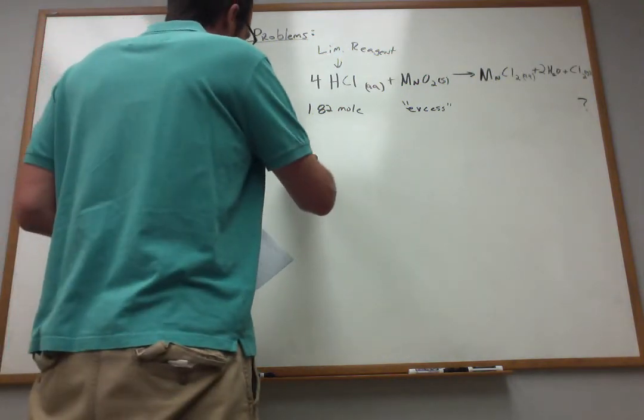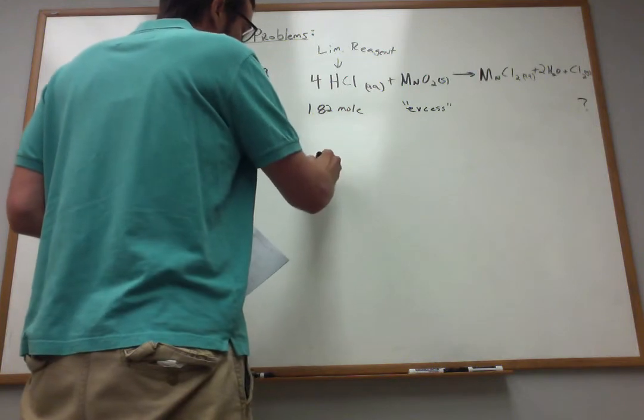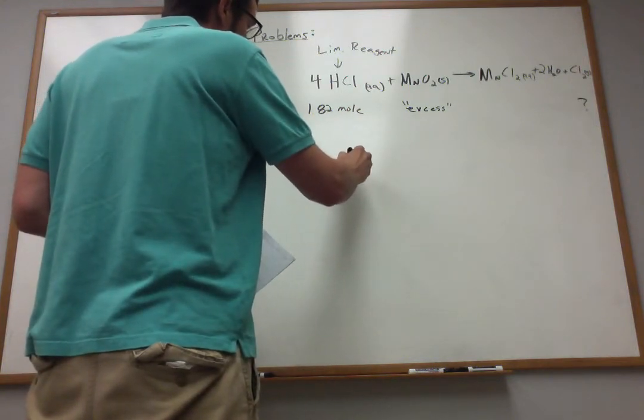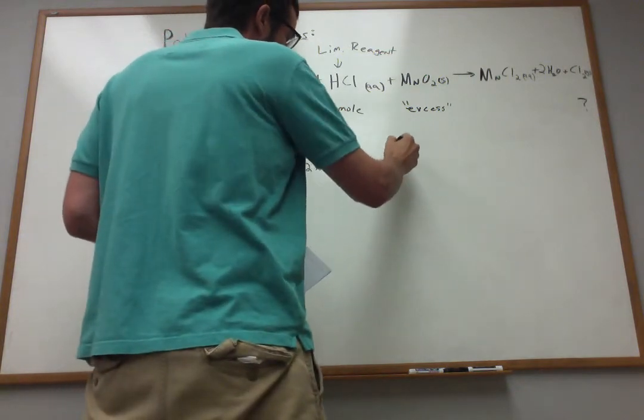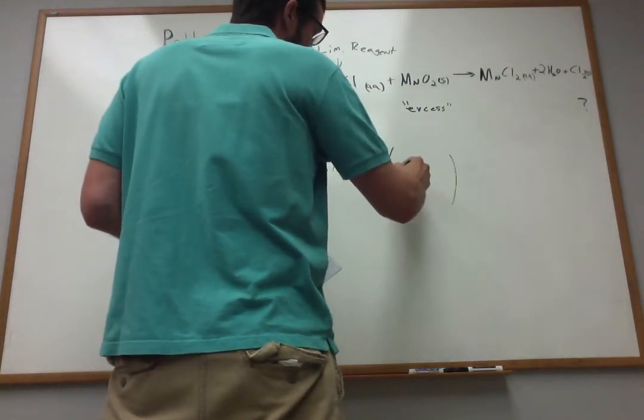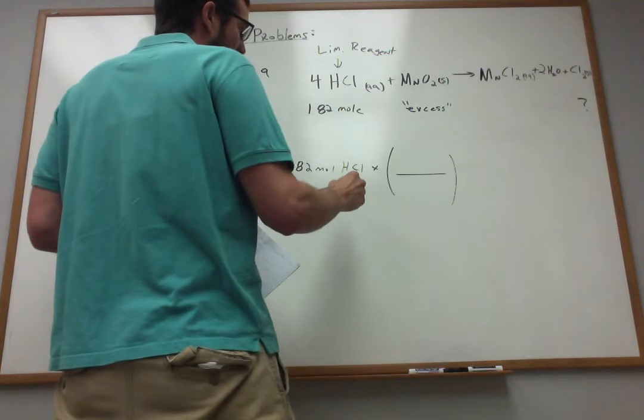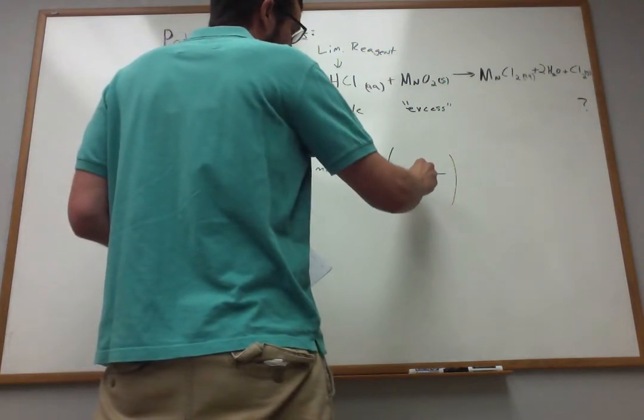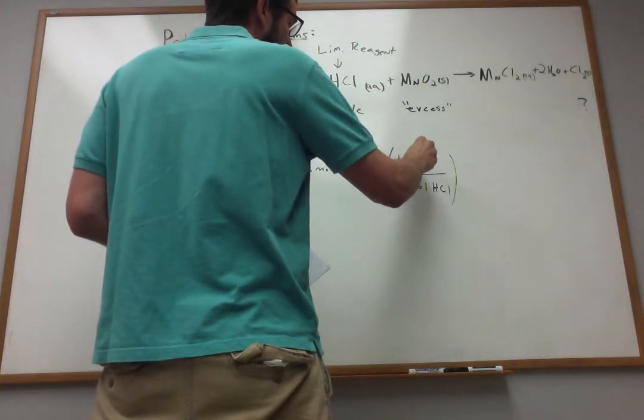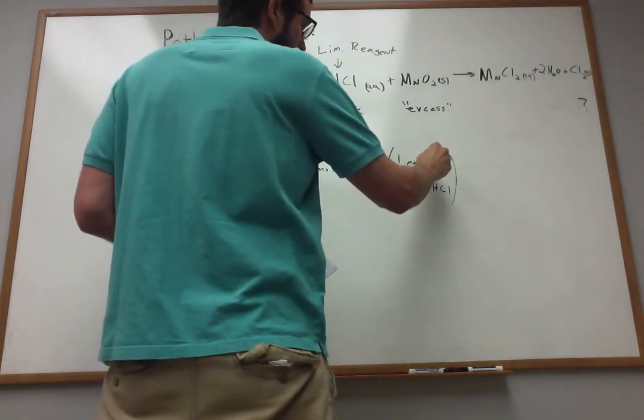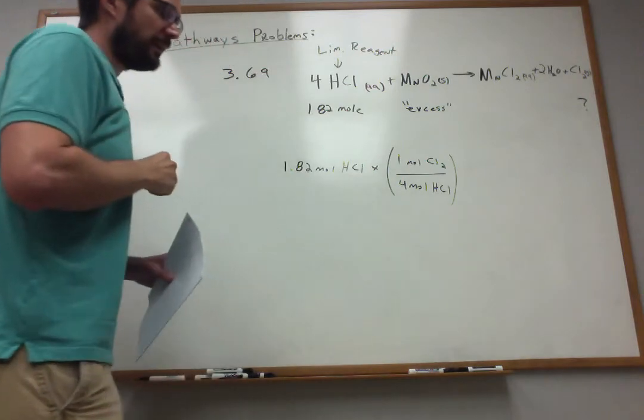So what that basically means is this 1.82 moles of HCl, it's going to limit how much chlorine we can make. So we can work the stoichiometry problem. We know that for every 4 moles of HCl,